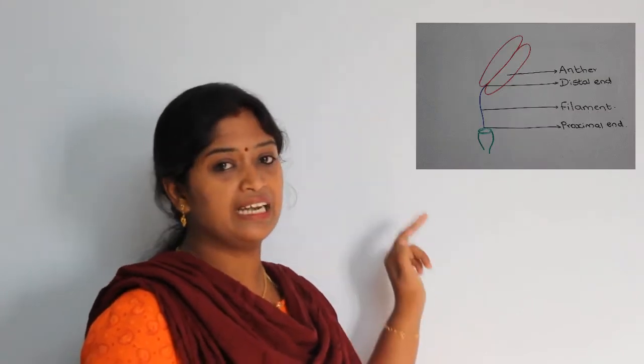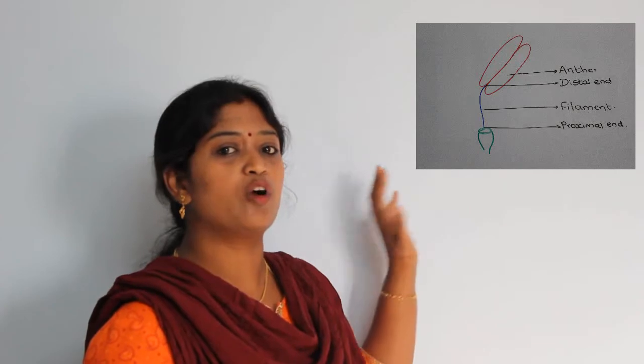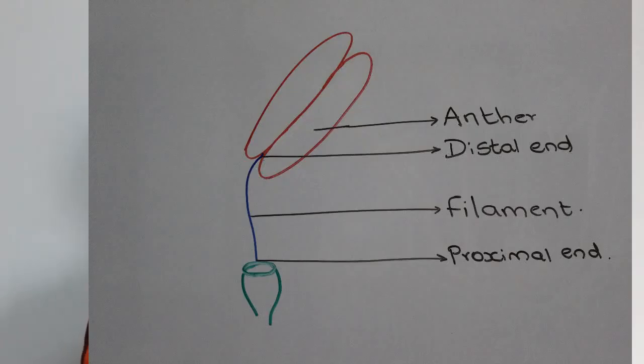In this video, let's study about the different types of anther based on the number of lobes and the type of fixation of the filament to the anther, along with the internal structure of anther. We know that stamen is the male reproductive structure of a flower, consisting of two important structures: the anther, which is a lobe-like structure, and the filament, a thread-like structure. The proximal end of the filament is attached to the thalamus and the distal end is attached to the anther.